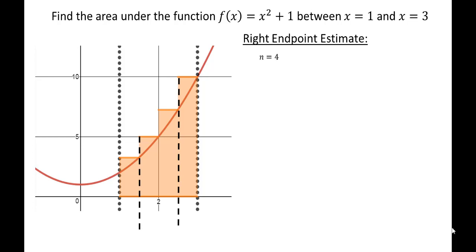Let's define our x values. We have x zero, x one, x two, x three, x four — four rectangles but five different x values. The x values are: x zero equals 1, x one equals 3 halves, x two equals 2, x three equals 5 halves, and x four equals 3.